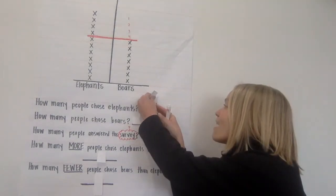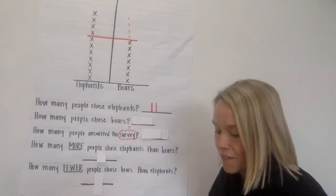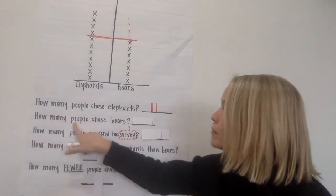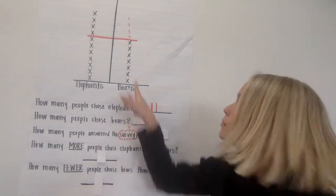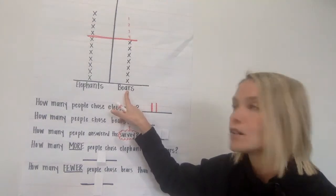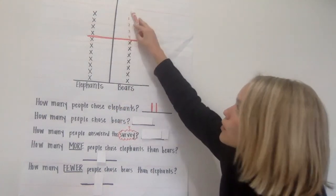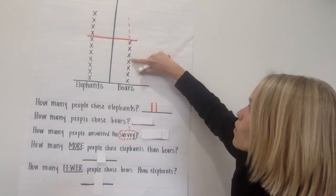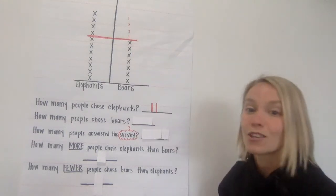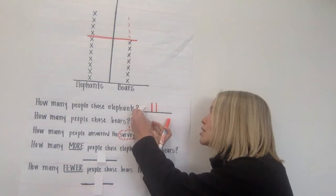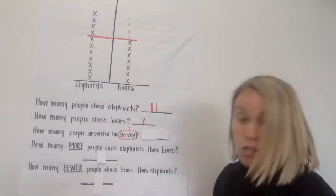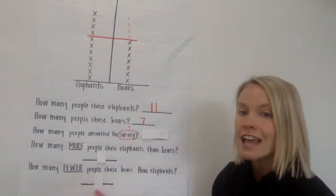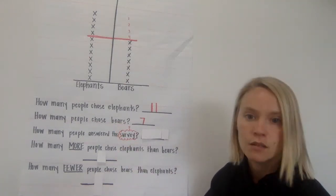That's a lot of people! The next question says how many people chose bears. Go ahead and count — don't count the red up here. One, two, three, four, five, six, seven. Seven of his friends chose bears. So we were right — more friends chose elephants than bears, and we know that because seven is less than eleven.